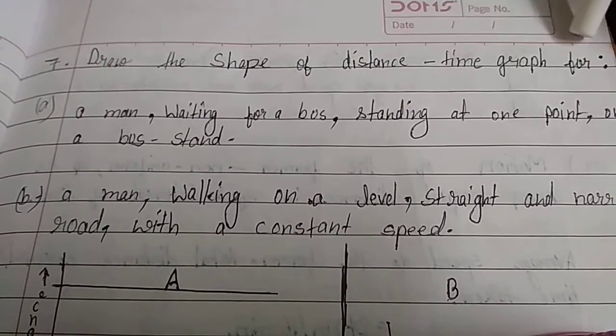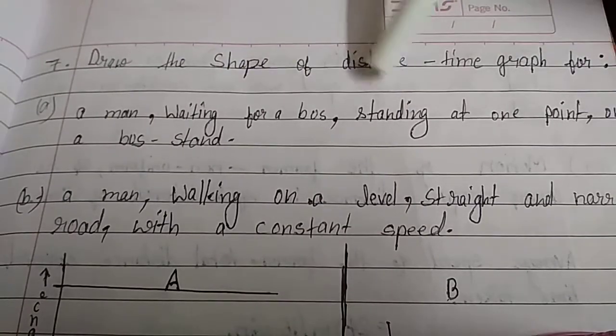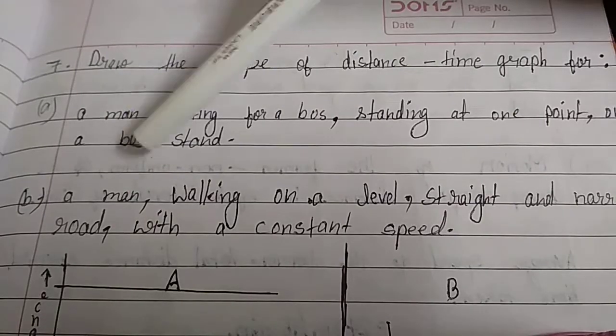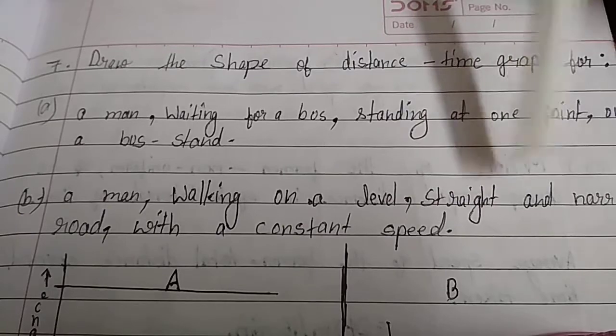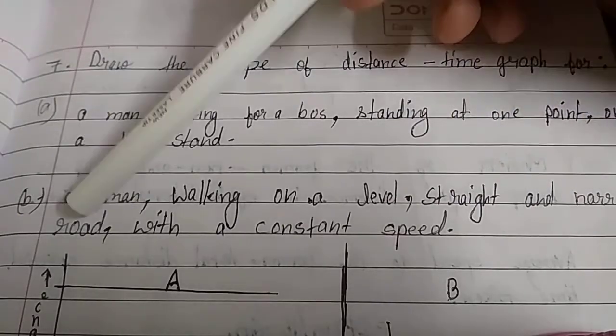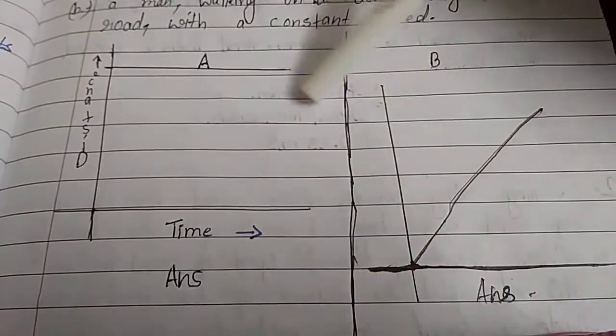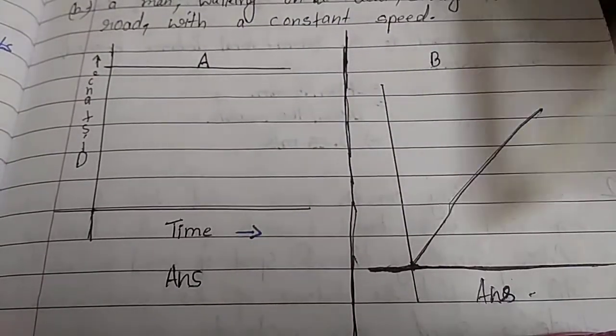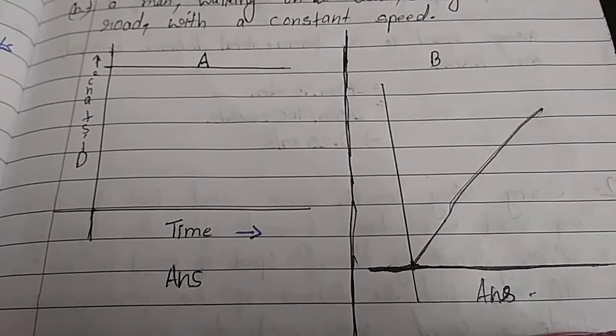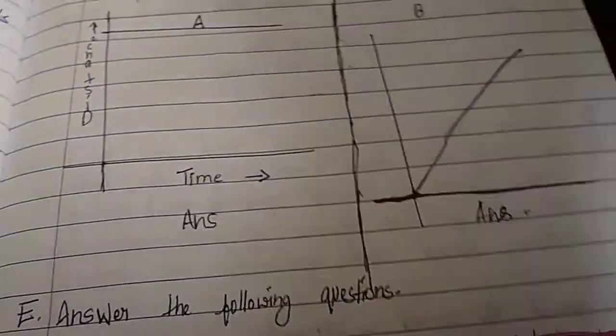Seventh question: Draw the shape of distance-time graph for: A) a man waiting for a bus, standing at one point at a bus stand, and B) a man walking on a level straight and narrow road with a constant speed. We will draw this. This is our distance and time, and this is our B. This is our drawing.